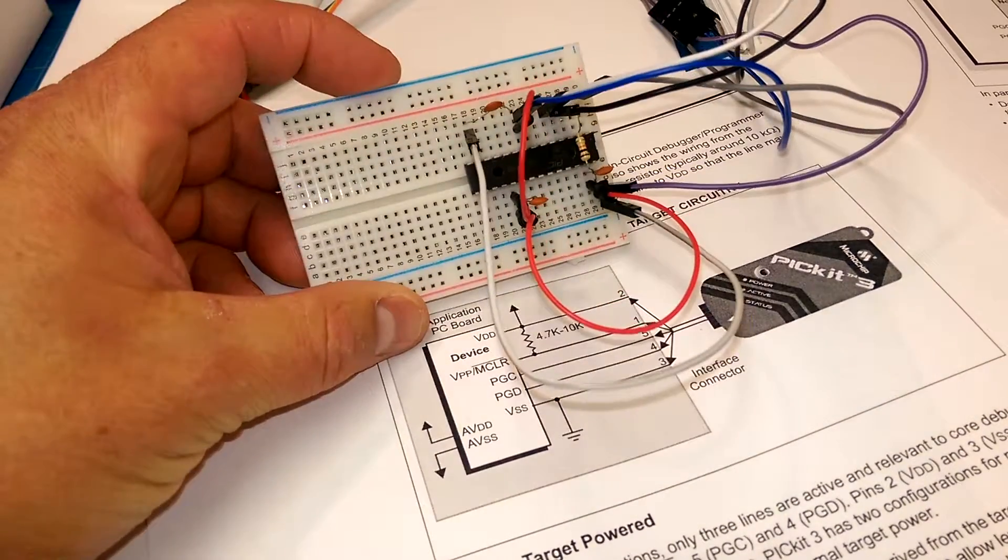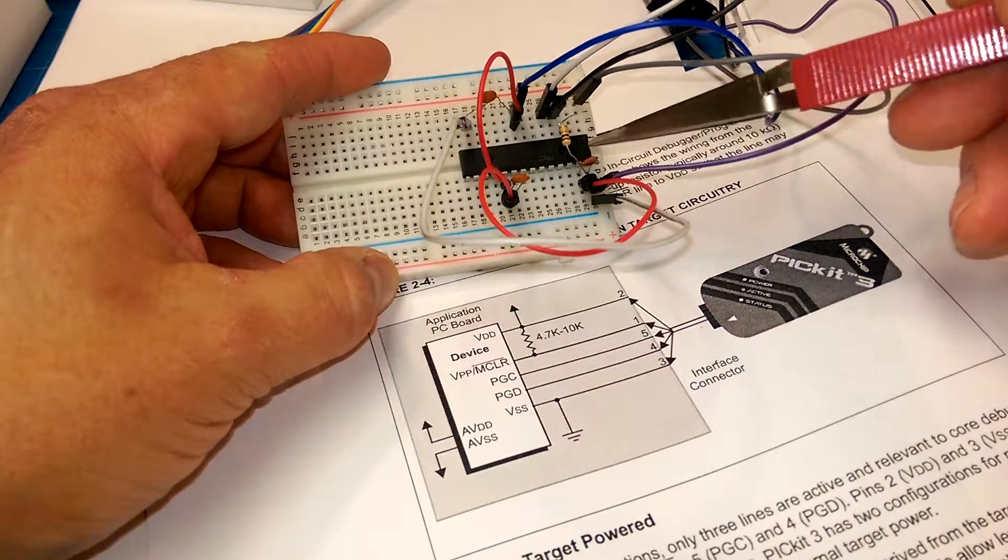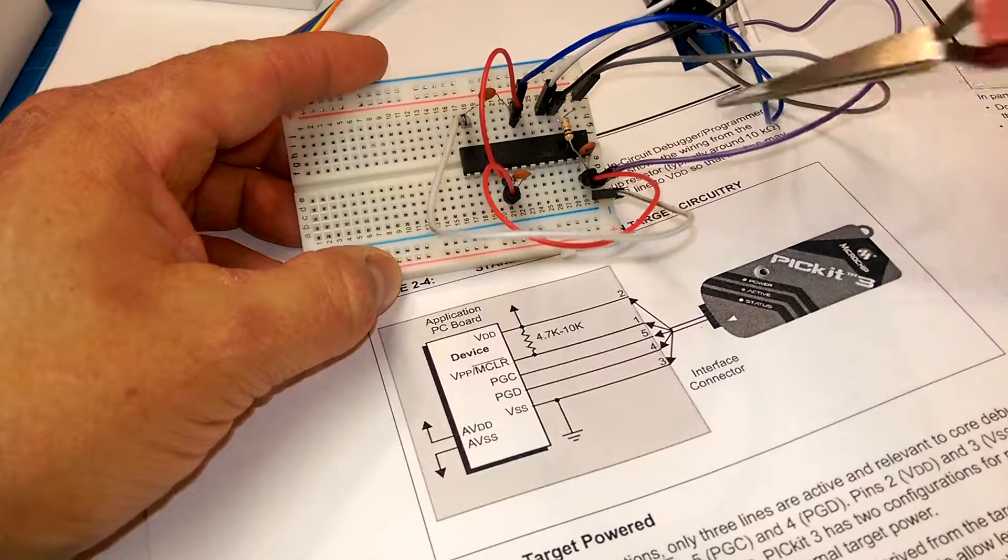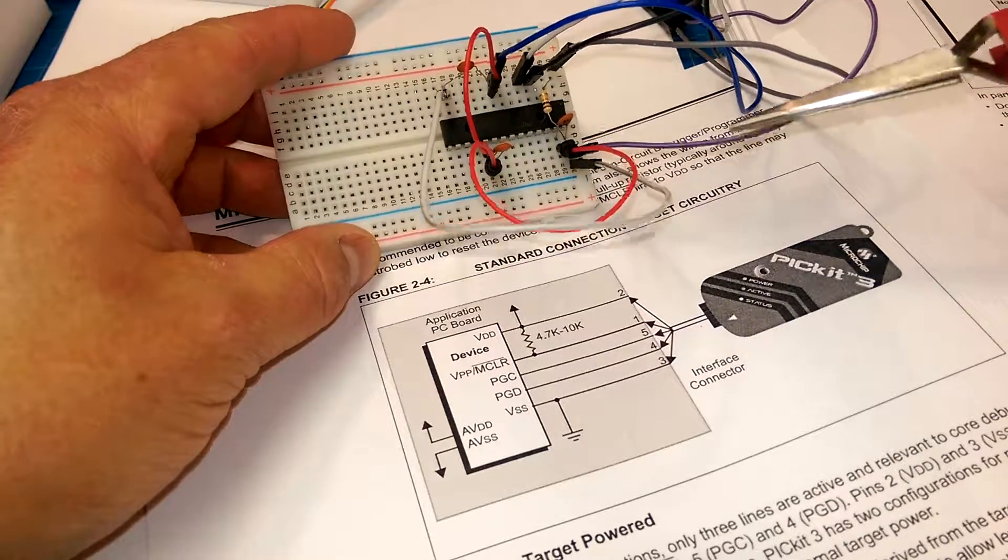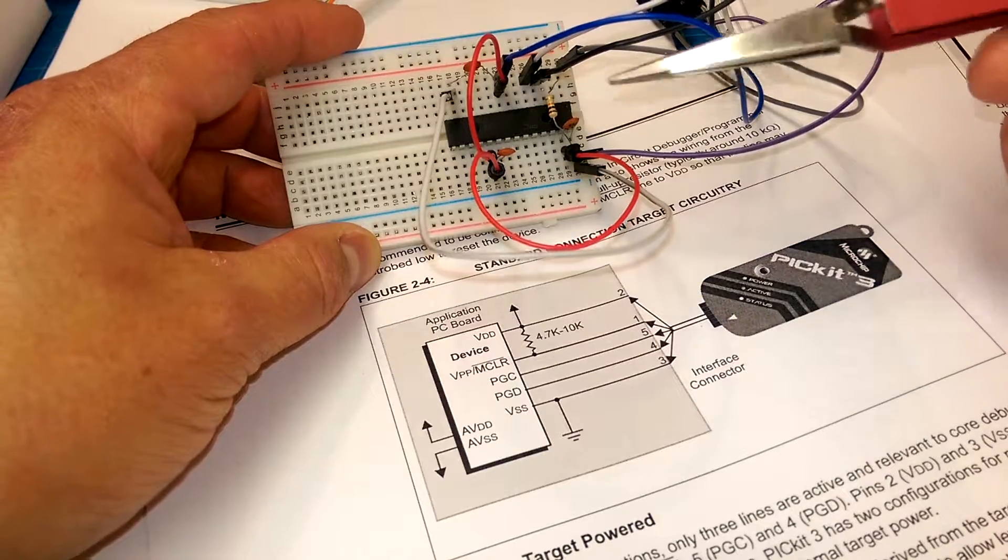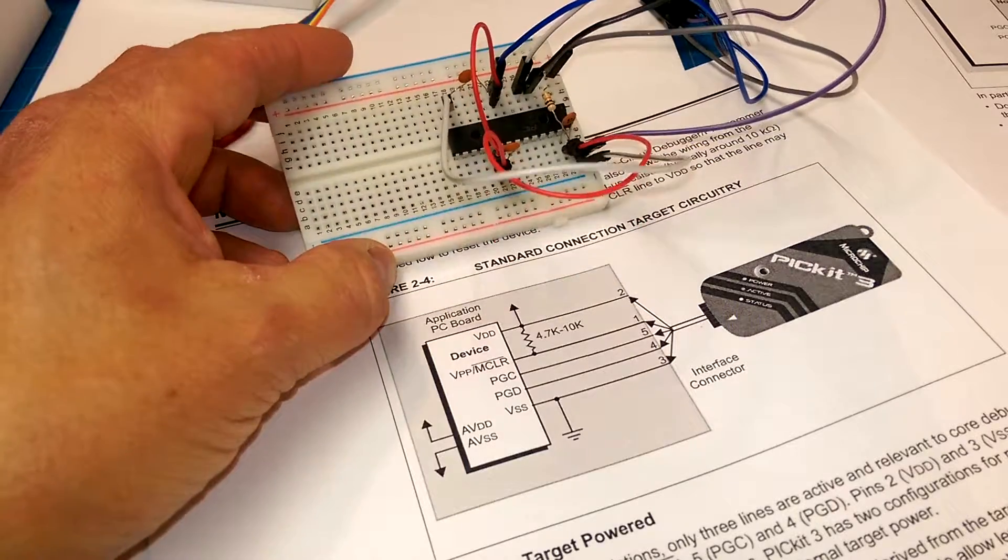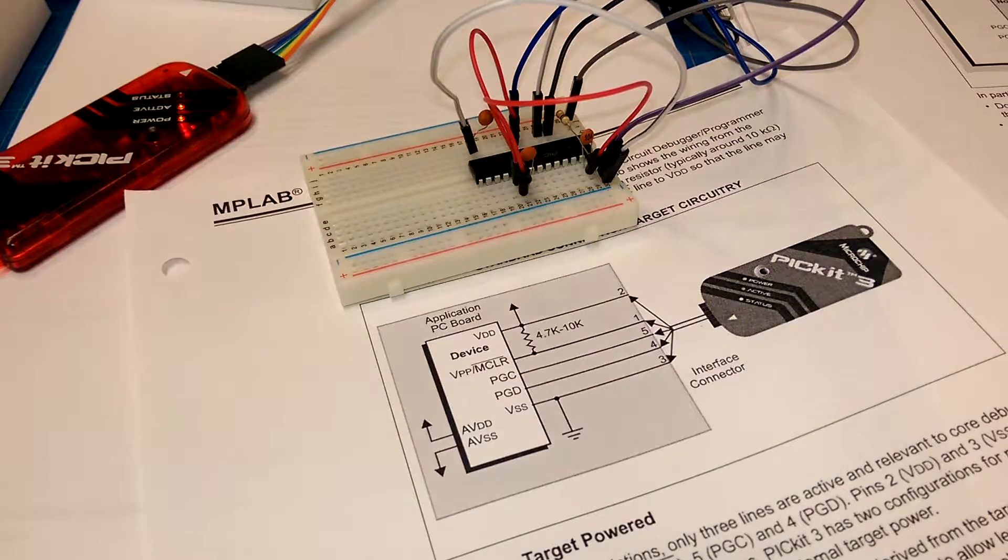And just for future reference programming PIC32 microcontrollers, put a bypass capacitor across your VSS and VDD and AVSS and AVDD lines and you will have much, much more joy. Thanks for watching.